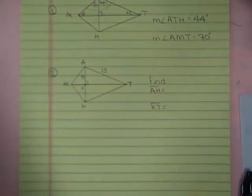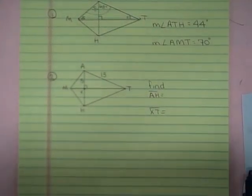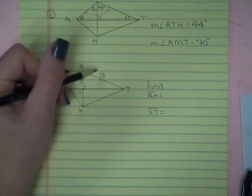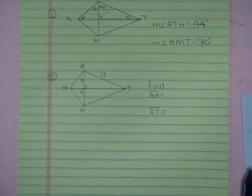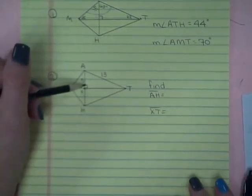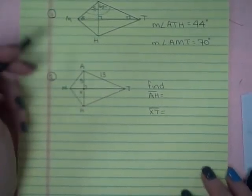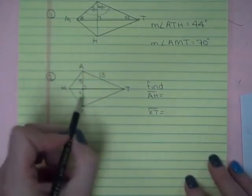If I move to the next one where I'm missing some sides, notice now I have pieces of the leg of the kite, and I have a piece of the diagonal of the kite. So again, we do have a right triangle where the diagonals meet and it's just basic Pythagorean theorem.